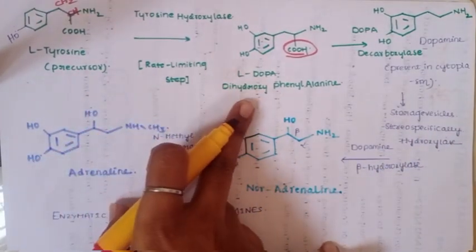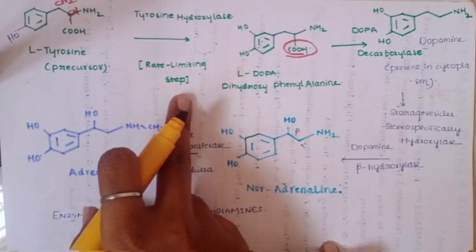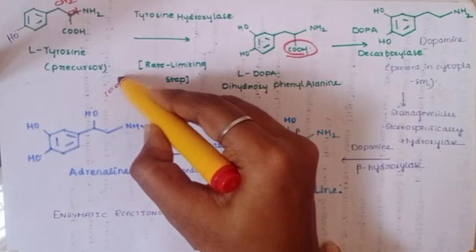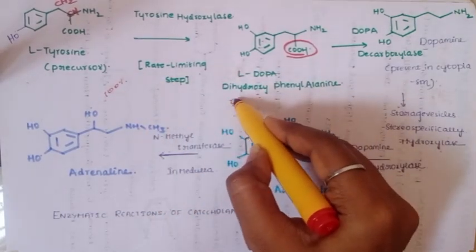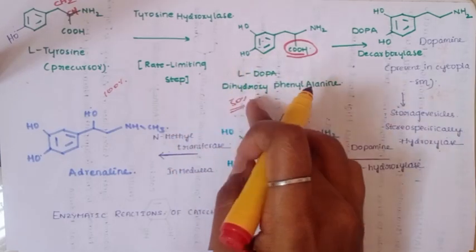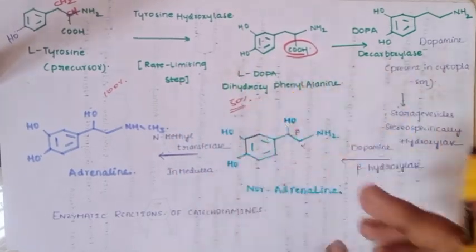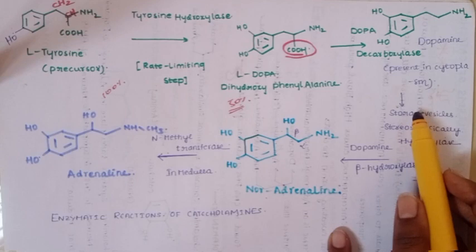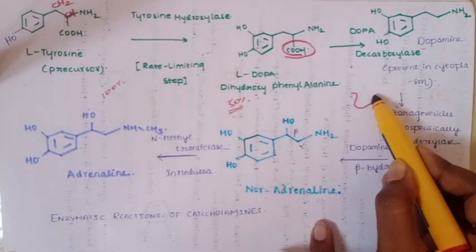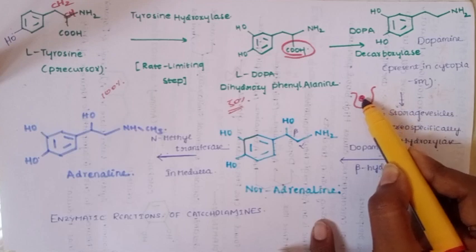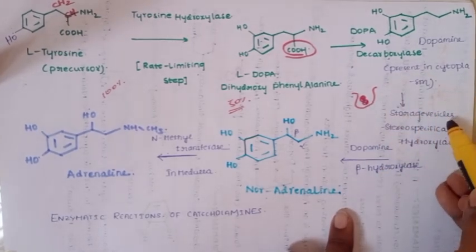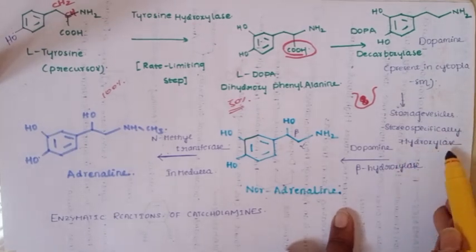The conversion of tyrosine to L-DOPA by tyrosine hydroxylase is the rate-limiting step of the entire biosynthesis pathway. Dopamine is then stored in storage vesicles within the neuron.